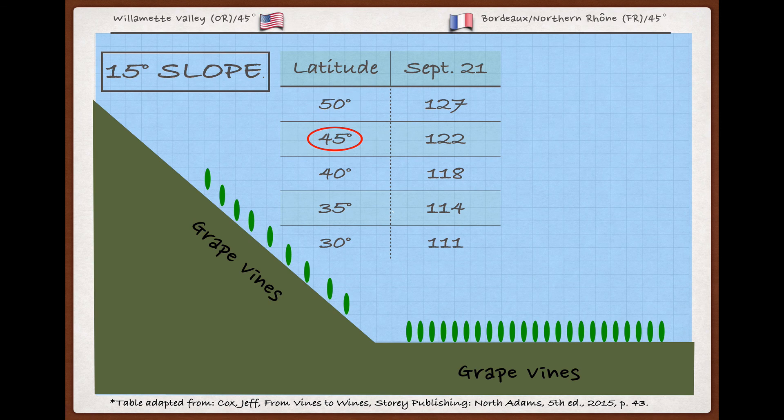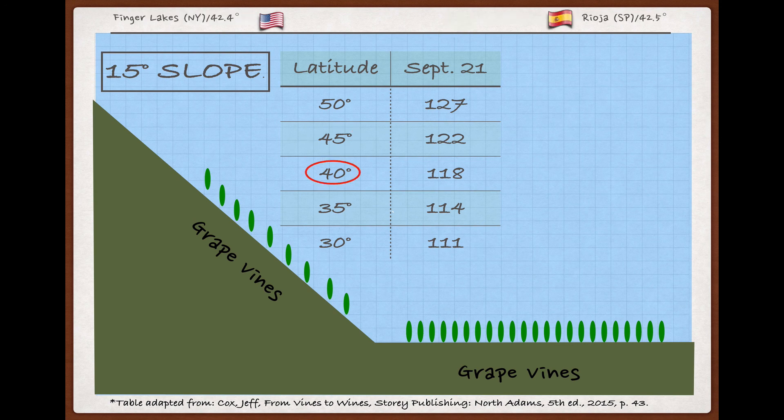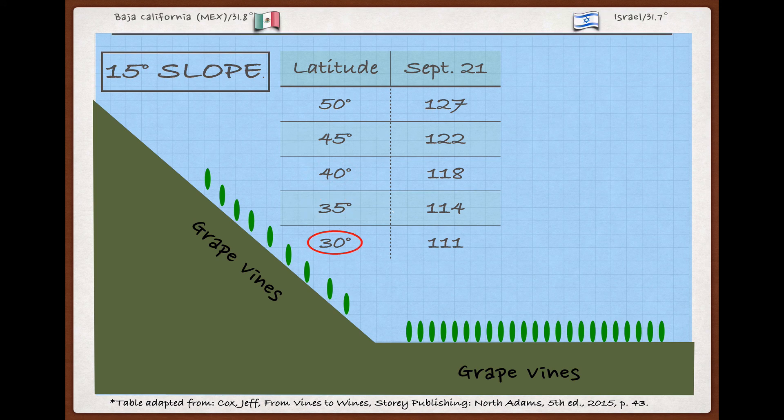And we'd find the same lessening of concentration as we hit 40 degrees, and then 35, and finally 30, at the bottom end of what's usually thought to be the best latitudes for growing grapes for quality wine production.